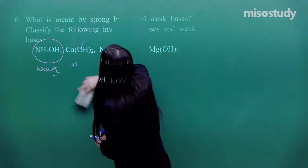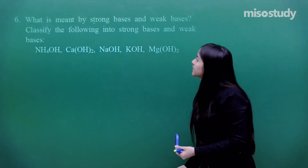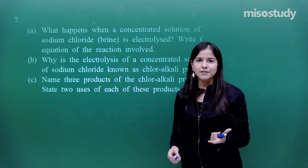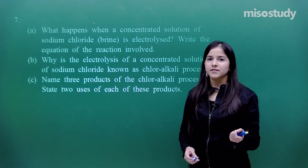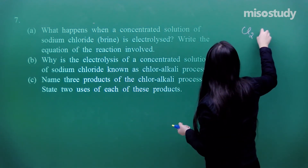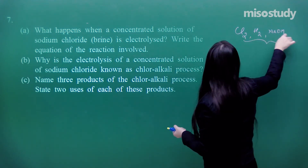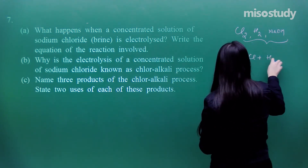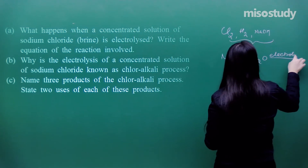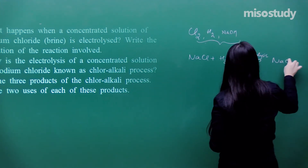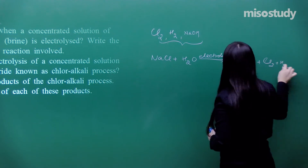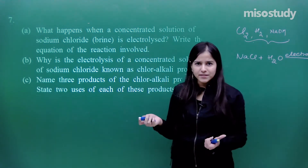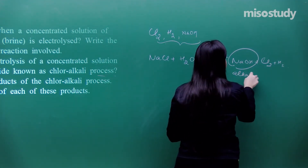Question number 7: What happens when a concentrated solution of sodium chloride (brine) is electrolyzed? Write the chemical equation. The electrolysis of NaCl in the presence of water gives: NaOH (a base) + Cl₂ + H₂. This process is known as the chloralkali process. Why? Because it leads to the production of an alkali (NaOH) and chlorine (Cl₂).